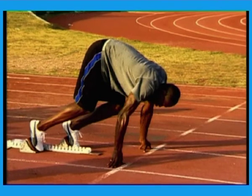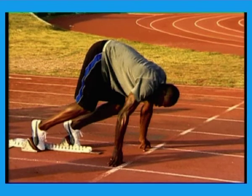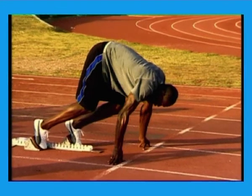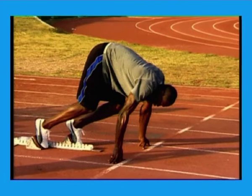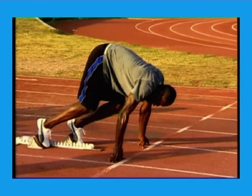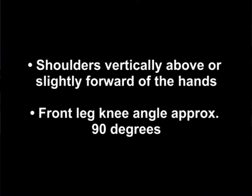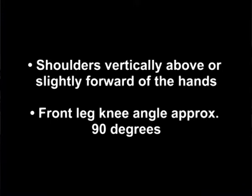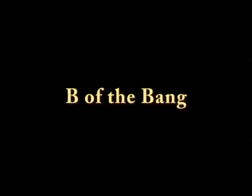Set: Hold the breath. Hips rise slowly to a position above the shoulders. Head and neck in line with the spine, shoulders vertically above or slightly forward of the hands. Front leg knee angle approximately 90 degrees, rear leg knee angle approximately 120 degrees. Feet pushed hard back into the blocks. Drive back with the arms.